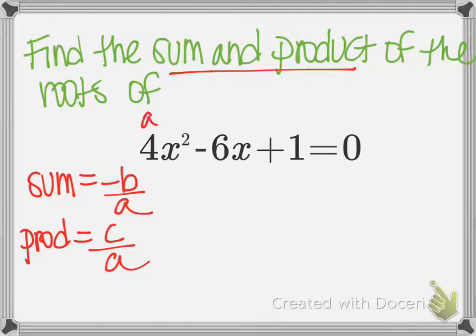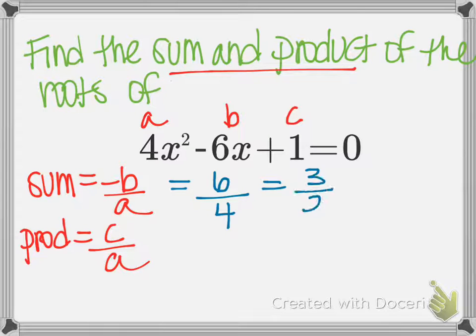So if we look at our a, b, and c, our sum in this case is, if I negate negative 6, that actually turns into a positive 6, and my a is 4. I could leave it like that or simplify that down to 3 over 2, which if this was something like a multiple choice question, you would most likely have your choices in simplified form. So my sum is 3 over 2.